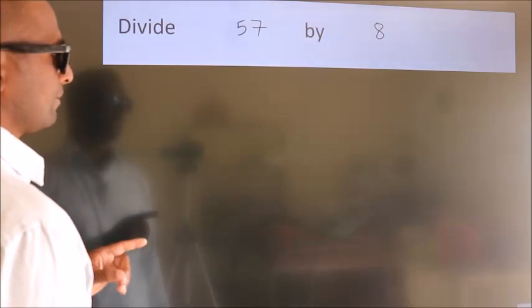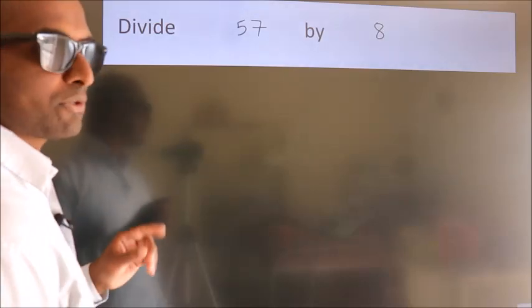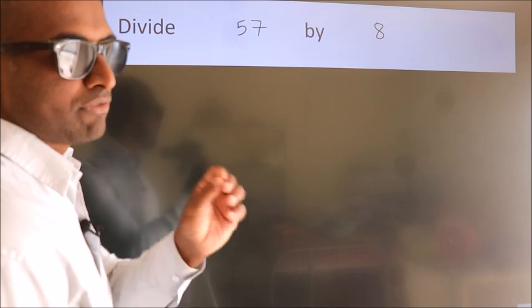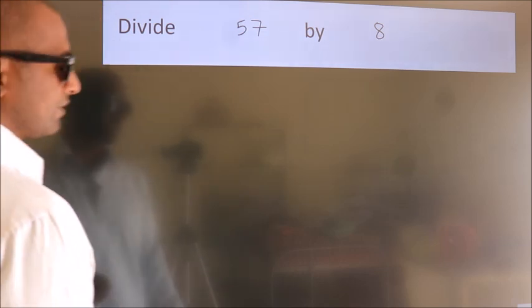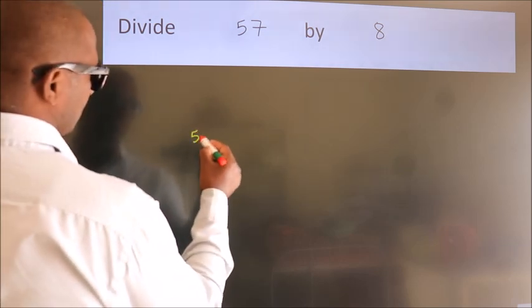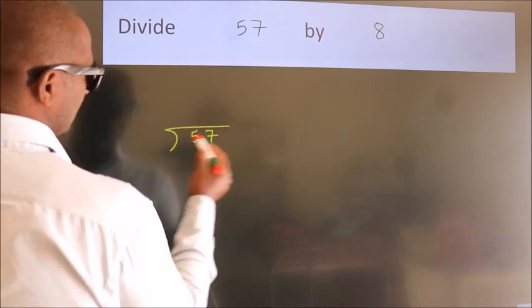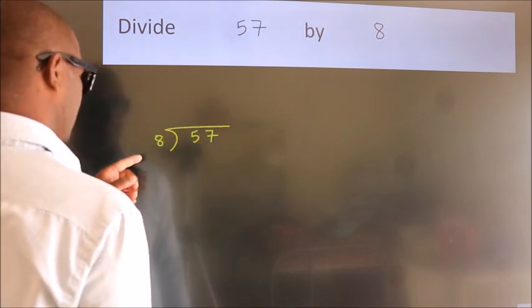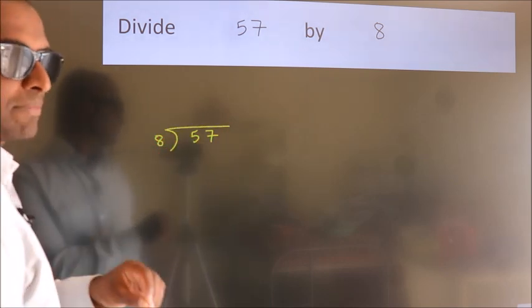Divide 57 by 8. To do this division, we should frame it in this way. 57 here, 8 here. This is your step 1.